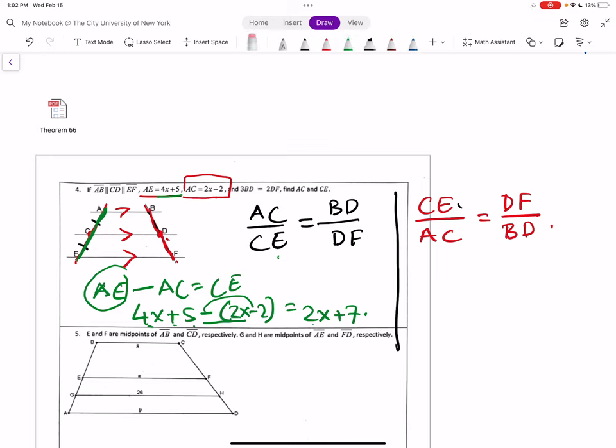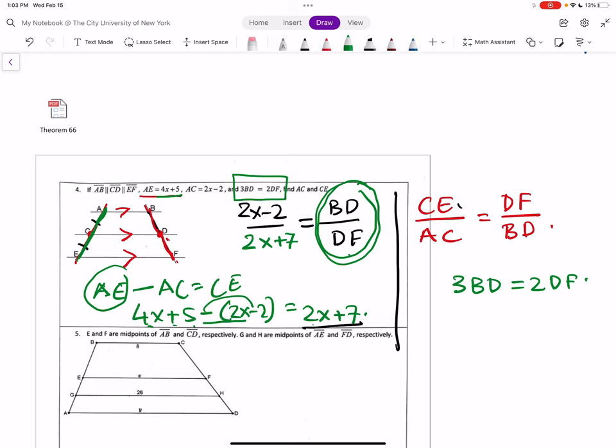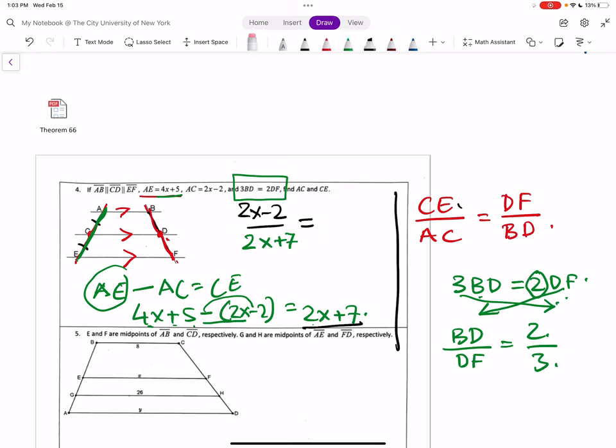So you can plug in these values here. For AC, what do you have? 2x minus 2. So if we plug in here, 2x minus 2 and CE, we just got it. 2x plus 7. Now our ratio of BD and DF. You see here, a ratio is given. 3BD equals 2DF. Now if my setup is this, then I go for the BD over DF. So I brought this down, cross multiply DF. So what happens? This 2 remains here. It goes here. So you get a 3. So your equation is formed up. So instead of that, you can write 2 over 3.